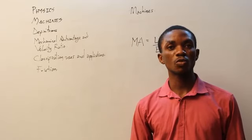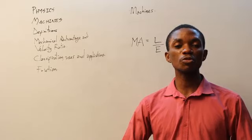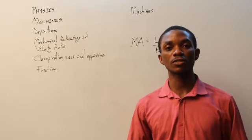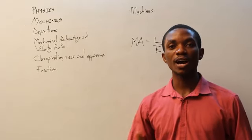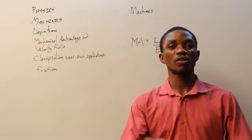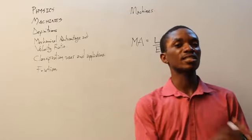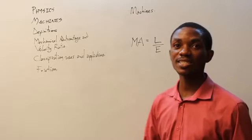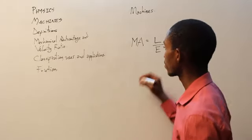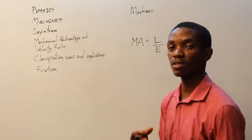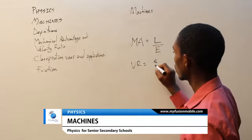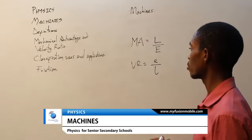The velocity ratio simply proves to us that we did not waste our time. It is simply a ratio of the distance of effort to the distance of load. That is, how far did your effort have to go to get the load through a certain distance? We represent distances in machines using small letters, and forces using capital letters, to differentiate the velocity ratio from the mechanical advantage. So, velocity ratio equals distance traveled by effort divided by distance traveled by the load.